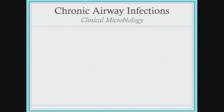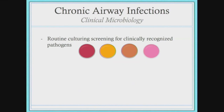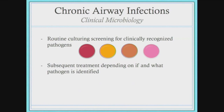When someone has a lung infection, the sample that a clinic will take is a sputum sample — that's your spit — which can either be expectorated spontaneously or induced by breathing in saline. That sample is sent to the clinical microbiology lab where they do routine culturing, screening for certain pathogens using select media types — synthetically created environments with different supplements and nutrients to facilitate growth and isolation of pathogens like Pseudomonas aeruginosa and Staph aureus. Once a pathogen is isolated, treatment is usually a general course of antibiotics.